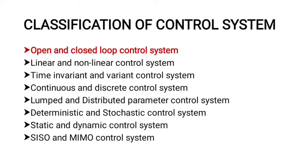The classification of control systems includes: open loop and closed loop (the major classification); linear and nonlinear; time invariant and time variant; continuous and discrete; lumped and distributed parameter; deterministic and stochastic; static and dynamic; and SISO (single input single output) and MIMO (multiple input multiple output) control systems.